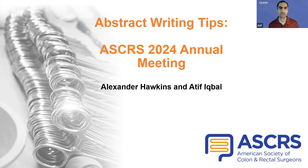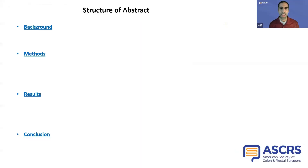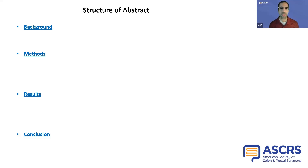Let's start with the structure of the abstract. An abstract is meant to provide a clear and concise overview of your research, highlighting the main points and findings. It should give readers a quick understanding of the study.